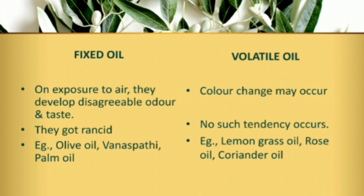Examples of fixed oils include olive oil, palm oil, and vanaspati. Examples of volatile oils include lemongrass oil, rose oil, and coriander oil. Commercially, volatile oils are very, very important and represent a very big business in today's market. If you have doubts, you can ask. Thank you, students.